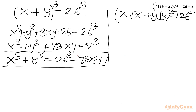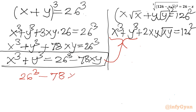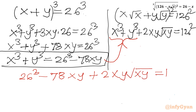For the second equation, squaring x√x + y√y = 126 gives (x√x)² + (y√y)² + 2·x√x·y√y = 126², which is x³ + y³ + 2xy√(xy) = 126². I will now substitute the x³ + y³ expression from the cubed equation into this result: 26³ - 78xy + 2xy√(xy) = 126².